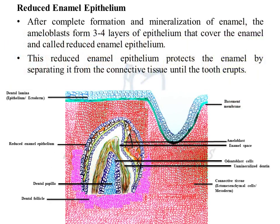Once the whole crown of the tooth has developed, the layers of the enamel organ — ameloblast layer, inner enamel epithelium, outer enamel epithelium, stellate reticulum, and stratum intermedium — reduce and regress, covering the crown of the tooth structure. This covering is referred to as the reduced enamel epithelium, which protects the tooth structure from the surrounding connective tissue and dental follicular cells, preventing abnormal structure formation over the crown surface.